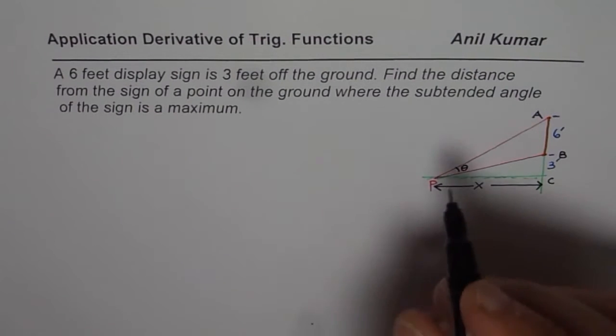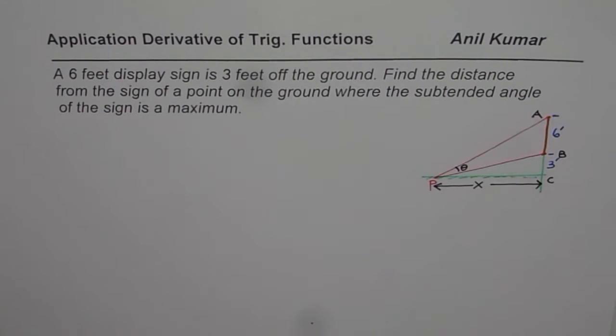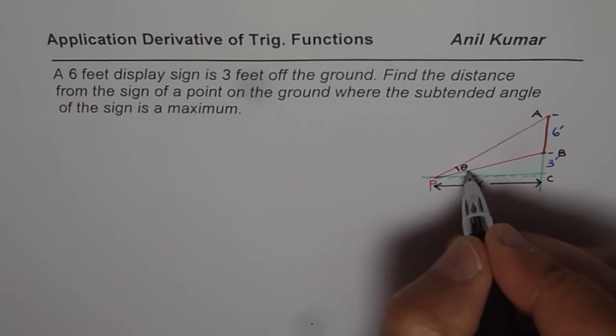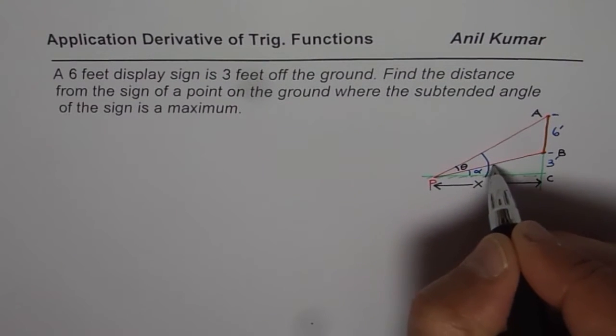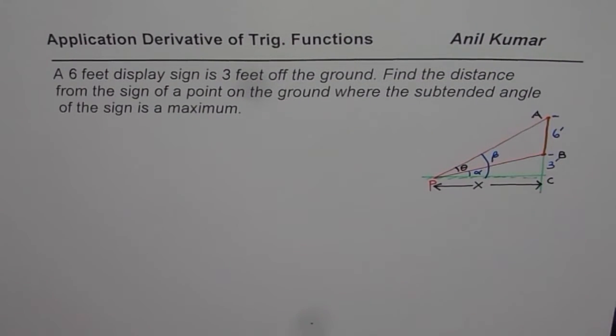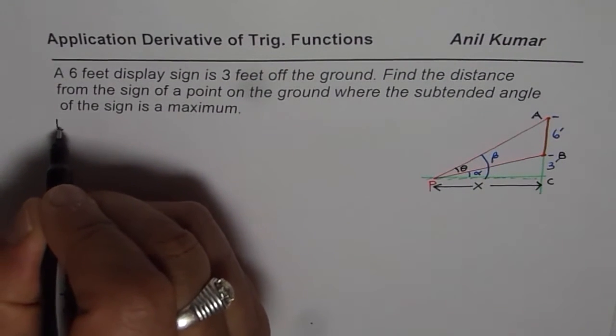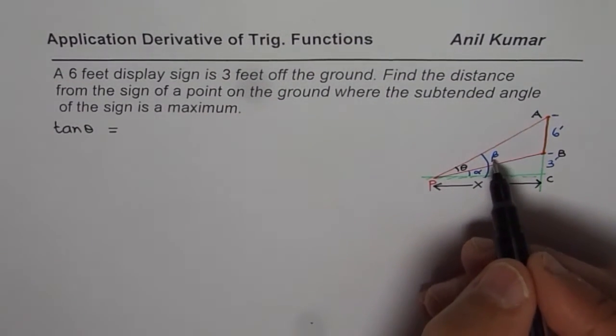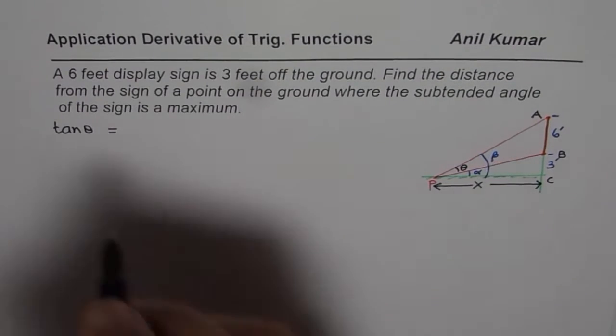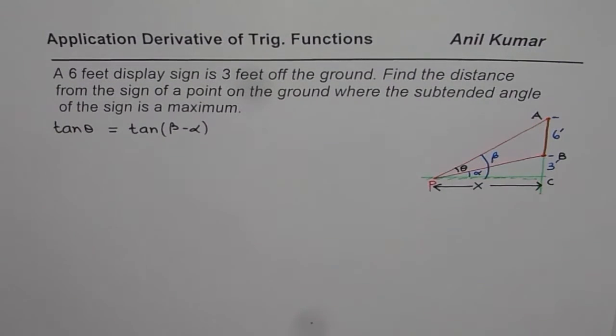So what we will consider is we want to maximize this angle. Let's say that this small angle is alpha, right? And the big angle here is beta, okay? In that case, you can write tan of theta as equal to theta is beta minus alpha, right?